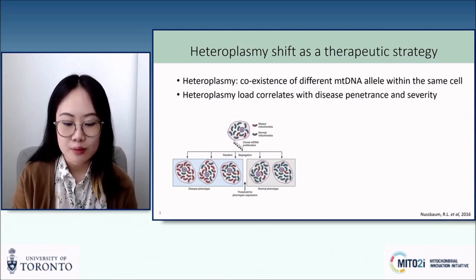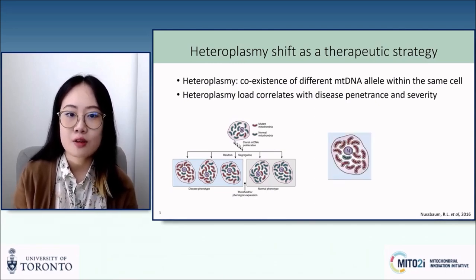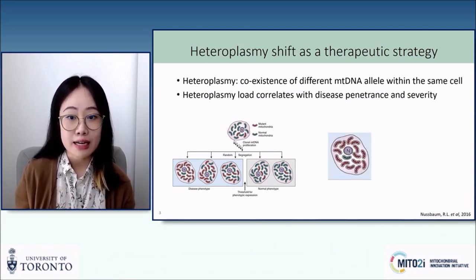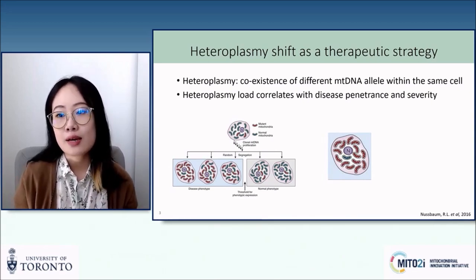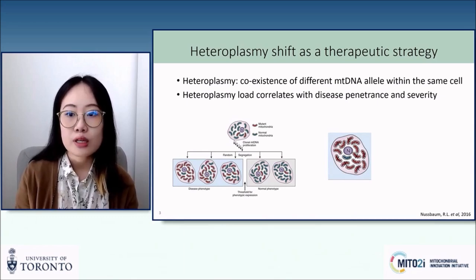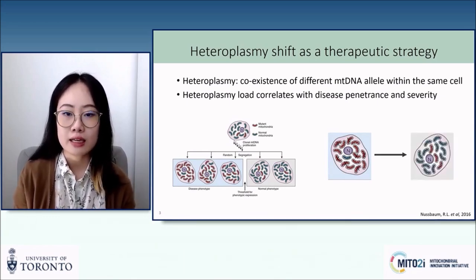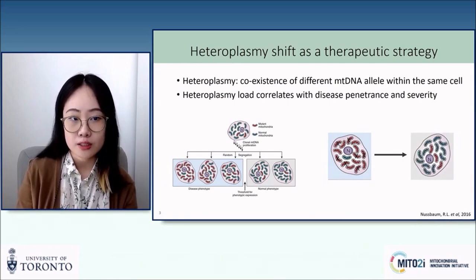For example, if we have a cell with multiple copies of the pathogenic allele depicted here in red, if we can somehow target these pathogenic copies of mitochondrial DNA to prevent their replication, we can then promote the replication of wild-type mitochondrial DNA alleles and hopefully restore mitochondrial function.